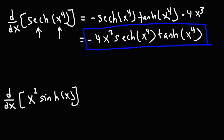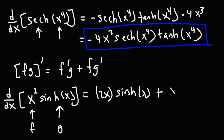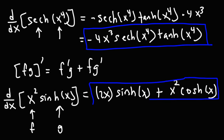For x squared times hyperbolic sine of x, we use the product rule: (fg)' = f'g + fg'. Here f = x² and g = sinh(x). So f' = 2x, giving 2x times hyperbolic sine of x, plus x squared times the derivative of hyperbolic sine, which is hyperbolic cosine. The answer is 2x sinh(x) + x² cosh(x).